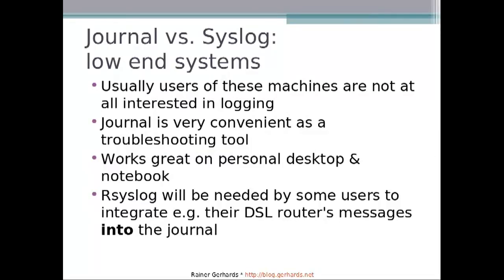Let's first focus on low-end systems. Users of these machines are usually not interested at all in logging. A low-end system for me is a home environment, a small office environment, or a personal notebook where people use logging usually only for short-hand troubleshooting — for example, if my Wi-Fi doesn't work, I go into the system log and check for relevant errors. They're not interested in auditing, long-time archival, or intelligence based on the logs. In this environment, the journal is a very convenient troubleshooting tool, and as far as I understood it, that was the prime environment the journal folks had in mind when they initially created it.